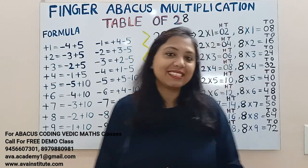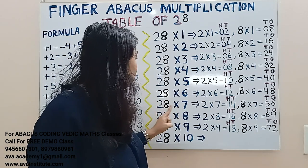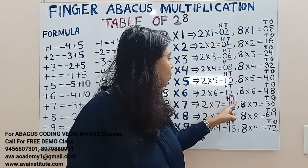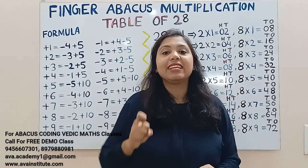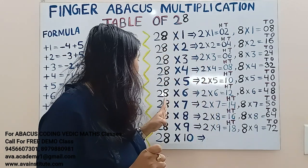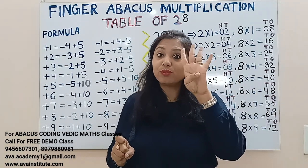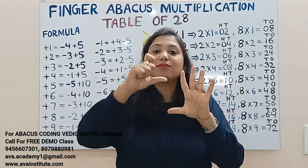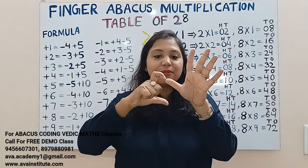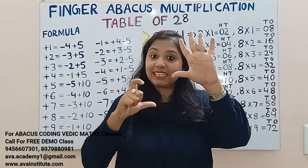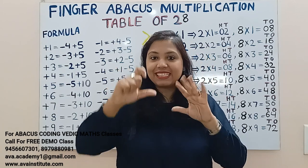Next, 28 sevens: 2 sevens are 14 — in hundreds: 1, in tens: 4. Now 8 sevens are 56 — in tens add 50, in ones add 6. So what is the answer? 100, 150, 160, 170, 180, 190, 191, 192, 193, 194, 195, 196. 196 is the answer.